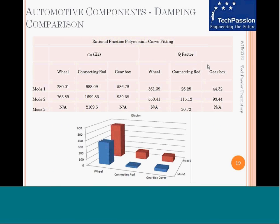Putting it all together for the three automotive components — wheel, connecting rod, and gearbox — we used the same curve fitting technique to extract resonant frequency and Q factor for each. An order of magnitude comparison of Q factors gives insight into the materials used and their corresponding material damping values. The plot shows Q factor on one axis, with the first and second modes plotted for each component, providing a visual comparison of which components have more or less built-in damping.